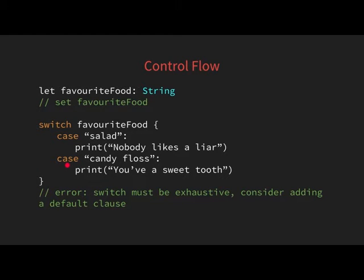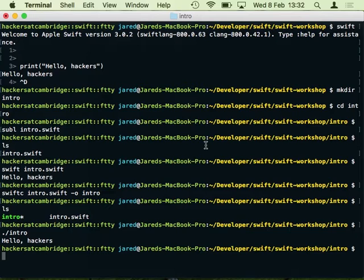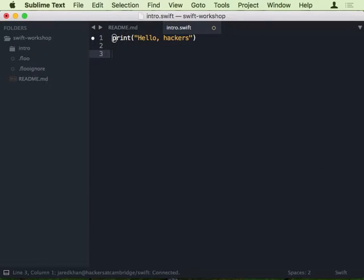Let's look at functions. In Swift we use the 'func' keyword, give the function a name, and provide parameters with a name and a type. We use arrow syntax for the return type — for example '-> Bool'. Inside we use the 'return' keyword. That's pretty much what you'd expect from other languages.